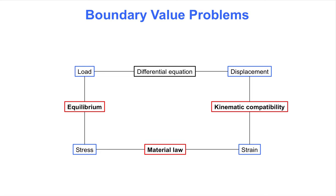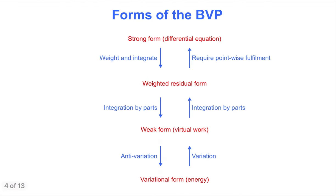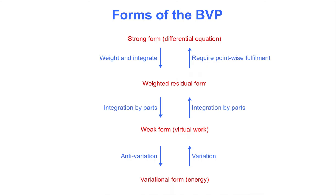The finite element method does not use the differential equation. It turns out that the differential equation is only one of four different forms of a boundary value problem. The differential equation is called the strong form because it implies that equilibrium, kinematic compatibility, and material law must be satisfied at every point in the material. We obtain a weaker form by applying a weight function and integrating over the entire element — a powerful step because it opens up the possibility of calculating approximate solutions. If we apply integration by parts to the weighted and integrated form, then we obtain the so-called weak form, which is identical to the virtual work formulation of the boundary value problem.